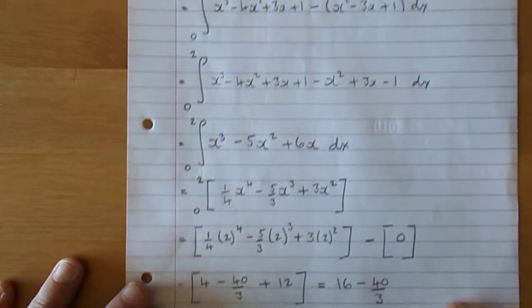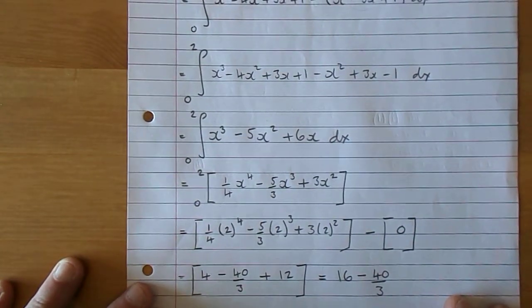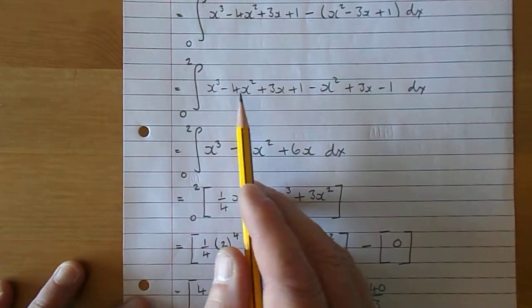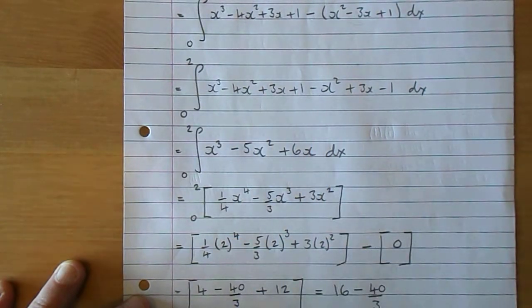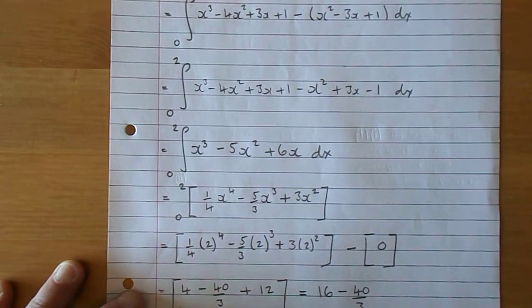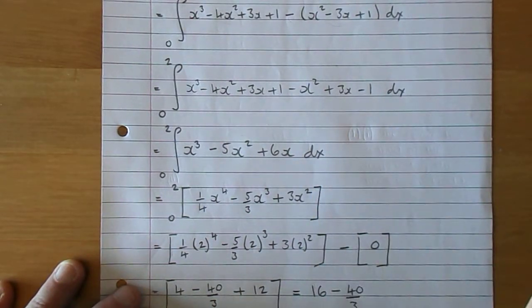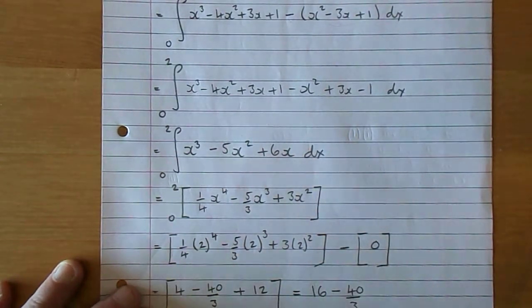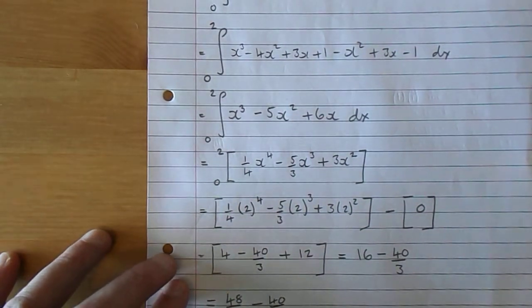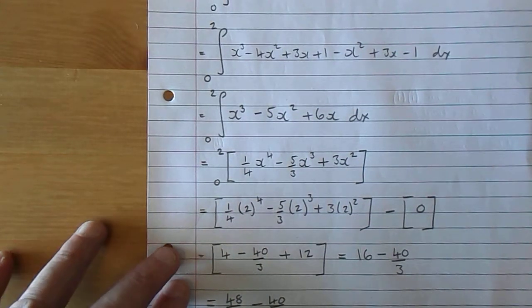Now tidy up that expression and you get x cubed, and you have take 4x squared take x squared is take 5x squared, and you have plus 3x plus 3x gives you plus 6x, and the plus 1 and the minus 1 cancel. So there we have it: x cubed take 5x squared plus 6x.